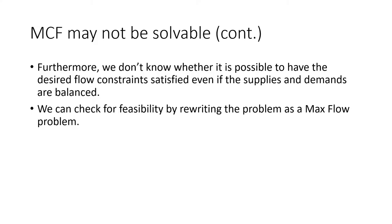We also don't know whether it's possible to have the desired flow constraints satisfied even if the supplies and demands are balanced. For example, if all edge capacities are zero, then even balanced supply and demand won't yield a feasible solution. The costs don't matter for feasibility — all we need is that there is a way to get flows through. We can check this part of feasibility by rewriting the problem as a max flow problem.